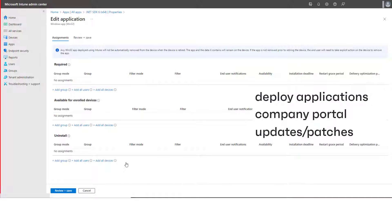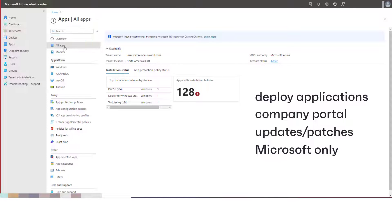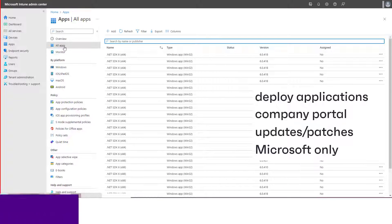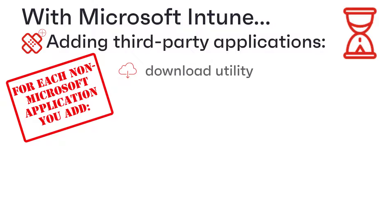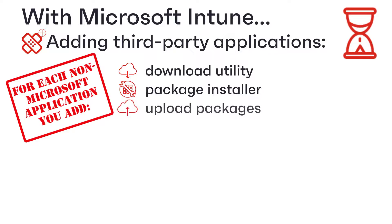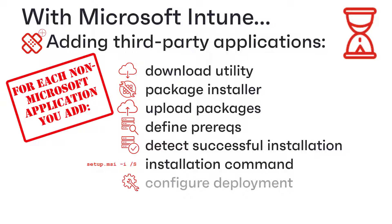One limitation of Intune is that by default it supports only Microsoft applications, and most organizations use applications from vendors other than just Microsoft. You can add third-party applications to Intune, but this is a somewhat complex procedure that involves downloading a separate utility to package the installer files, then uploading the packages you create, specifying how to detect prerequisites, how to detect a successful installation, specifying the installation commands, and only then configuring their deployment.